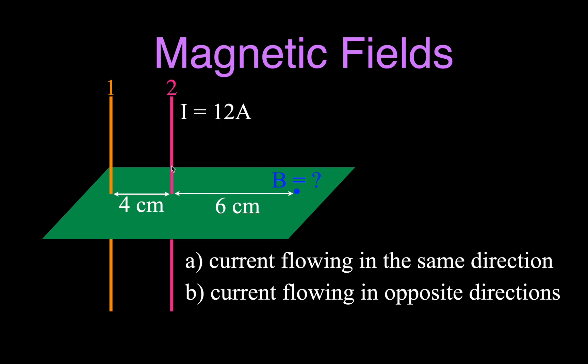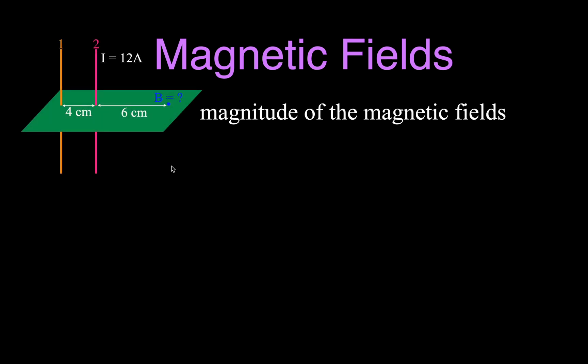The first thing we're going to do is figure out the magnitude of the magnetic field. The magnetic field is a vector quantity, so we need to know its magnitude and its direction. We're going to use this equation to figure out the magnitude. The direction we'll do after we figure out the magnitude, and I'll show you how to figure out which way the magnetic field is pointing at that point from each of those two wires.